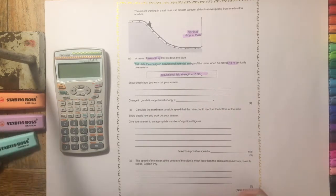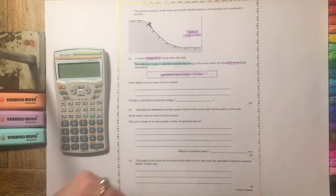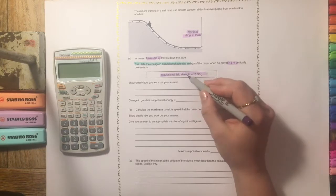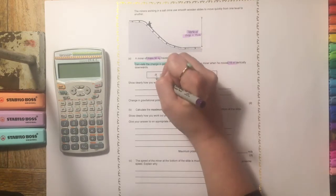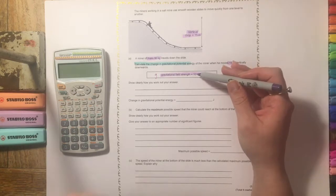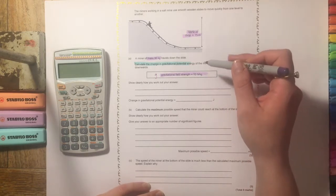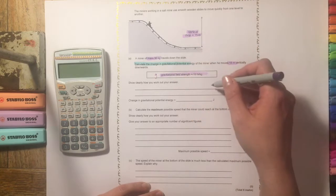So this is quite a basic start to a question. Something that's important to remember is this gravitational field strength, and this is what we would call g. Sometimes you have to use 9.8, sometimes you use 10, but they'll give it in the question so always keep an eye out for this.